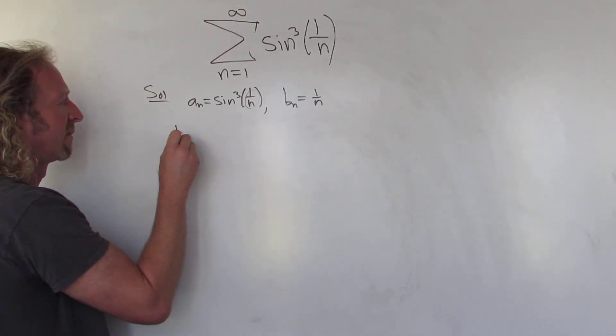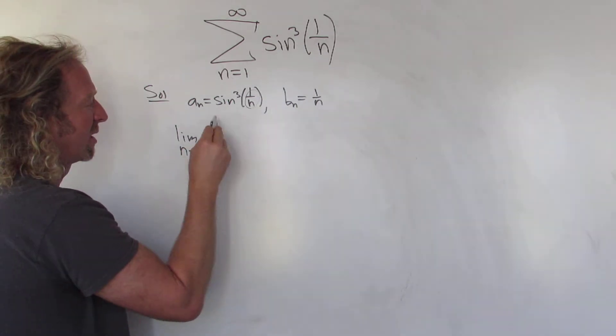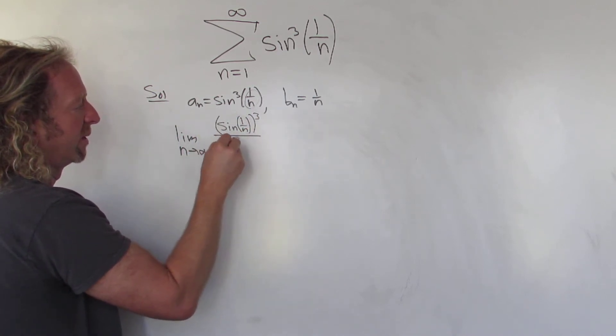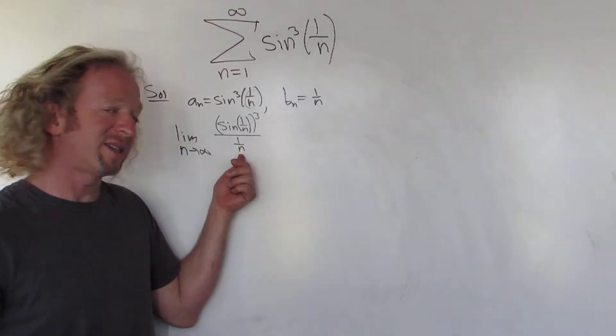So now we're going to take the limit as n approaches infinity of this over this. So I'm going to write it like this: sine of 1 over n cubed over 1 over n. Okay. And how are we going to take this limit?